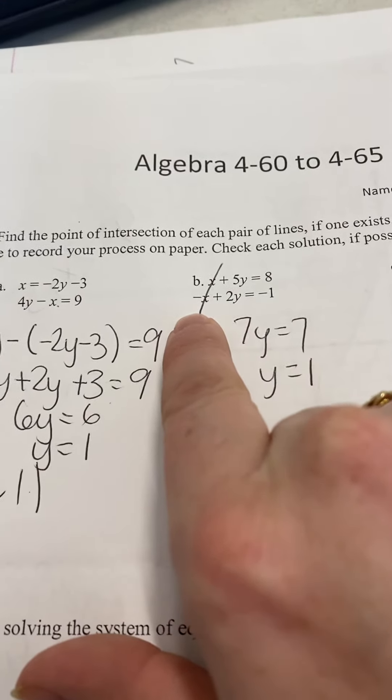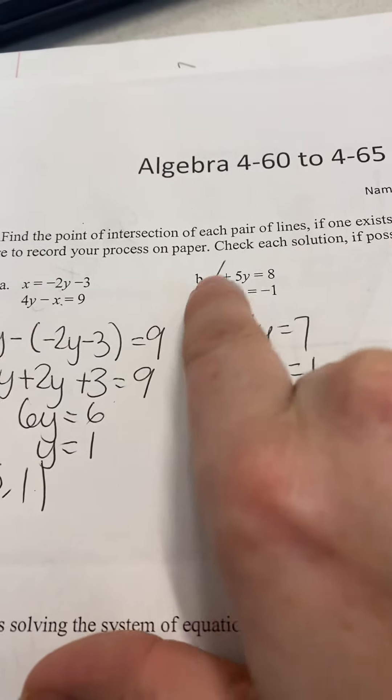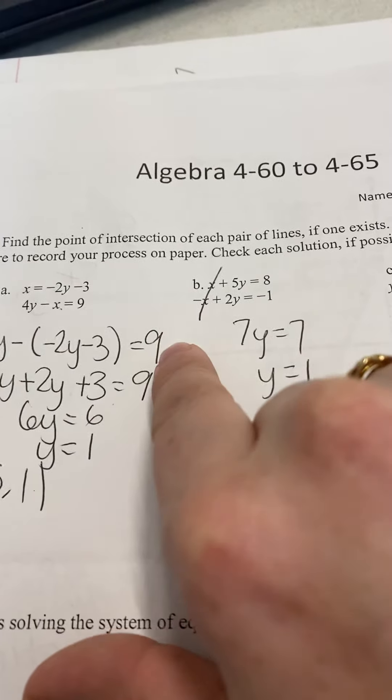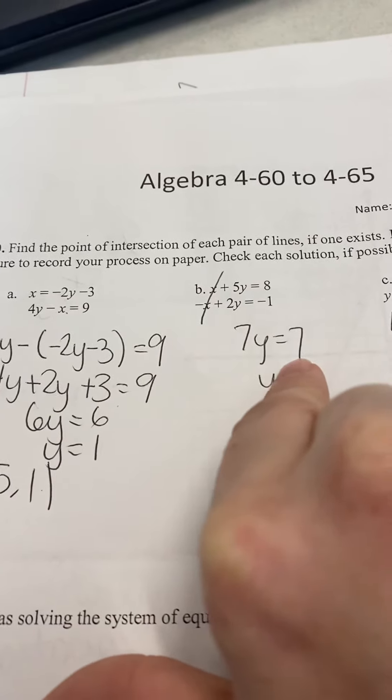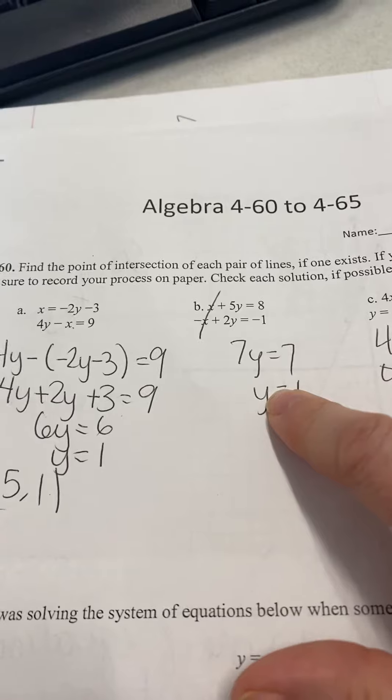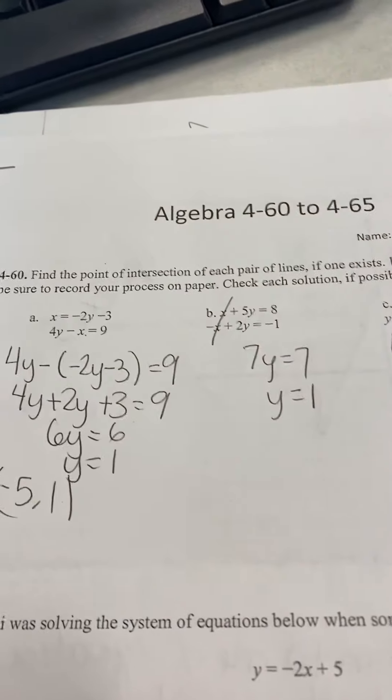If you add these two equations together, x plus negative x cancels. 5y plus 2y is 7y, and 8 minus 1 is 7, so you get y equals 1. Then you can plug that in to find x. On that one, you have to find x yourself—I'm not helping.